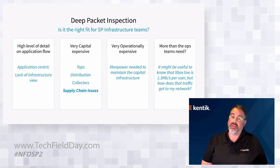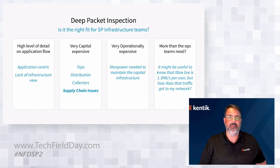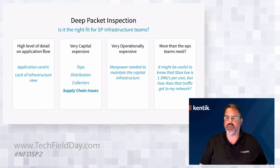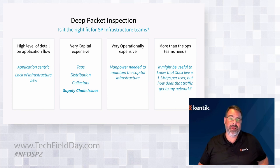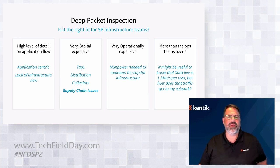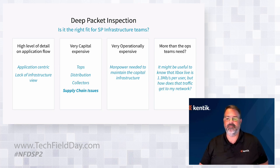Again, like the legacy netflow tools, DPI is not necessarily the right data for service provider operations teams. The example here: it might be useful to know that the average bit rate for Xbox Live is 1.3 megabits per second, but how did that traffic get onto my network? That's a data point, but is that going to help me solve a particular problem when help desk folks call saying we're getting a hundred phone calls saying Xbox Live has a problem? Knowing the average bit rate is only a single data point and doesn't necessarily help.